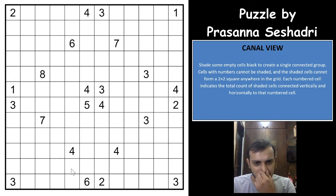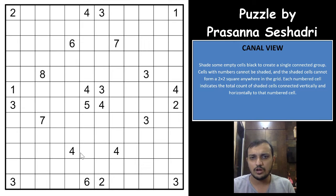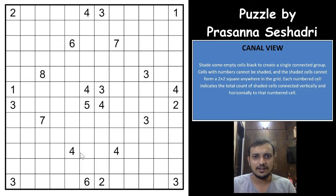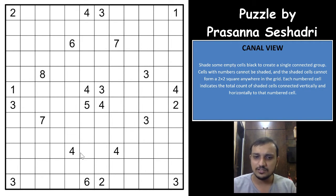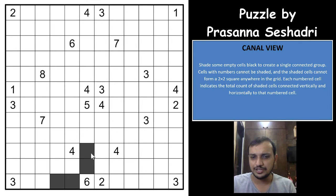With that we will start solving this puzzle. This is kind of a variation of a cave puzzle, and what we do is count the number of cells on each side and see the minimum number of cells that can be shaded. For the 6, for example, you have only 4 cells on each side, which means at least 2 cells on each side will have to be shaded.